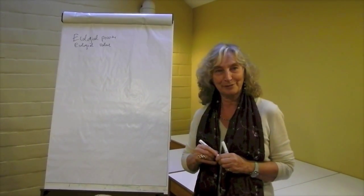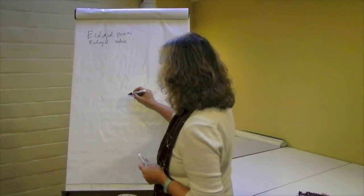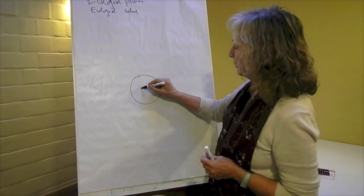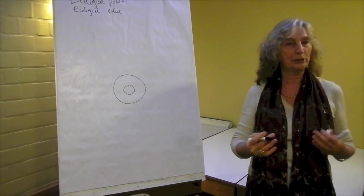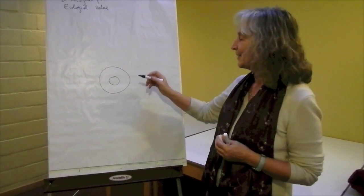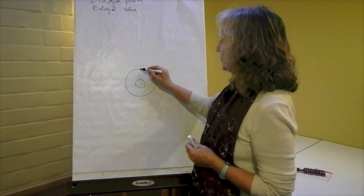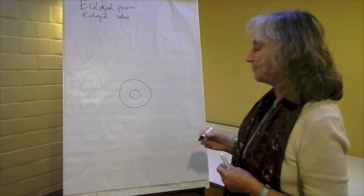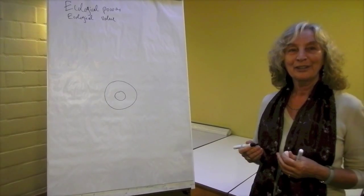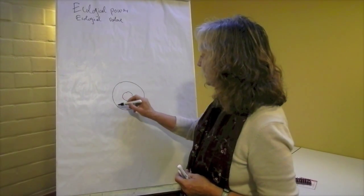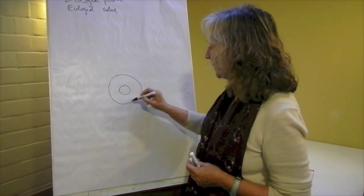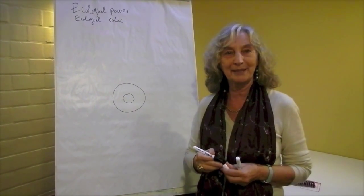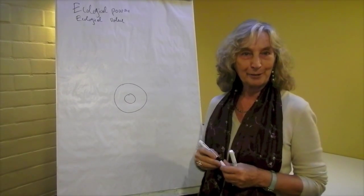If we take the example of mother and baby, the mother holds her baby inside her body or in her arms. The mother is the ecological power of the baby, and the baby is the ecological value of the mother. The well-being or strength of the mother influences the well-being and strength of the baby.